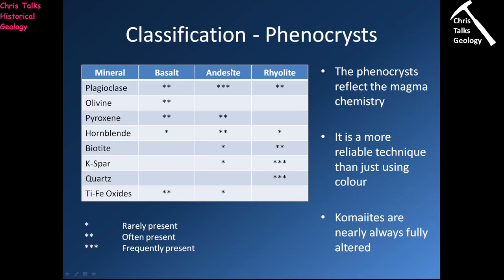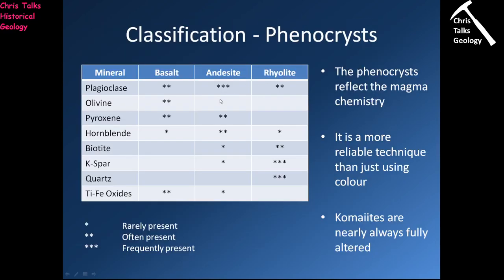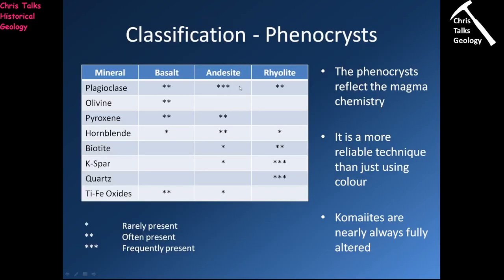In terms of andesites, they very commonly have plagioclase phenocrysts and also quite commonly hornblende phenocrysts. Looking at this sample, we can see creamy white-coloured crystals — that's the plagioclase feldspar. We can see loads of plagioclase feldspar and the rock is kind of a medium greyish, intermediate colour, which suggests it's probably an andesite.